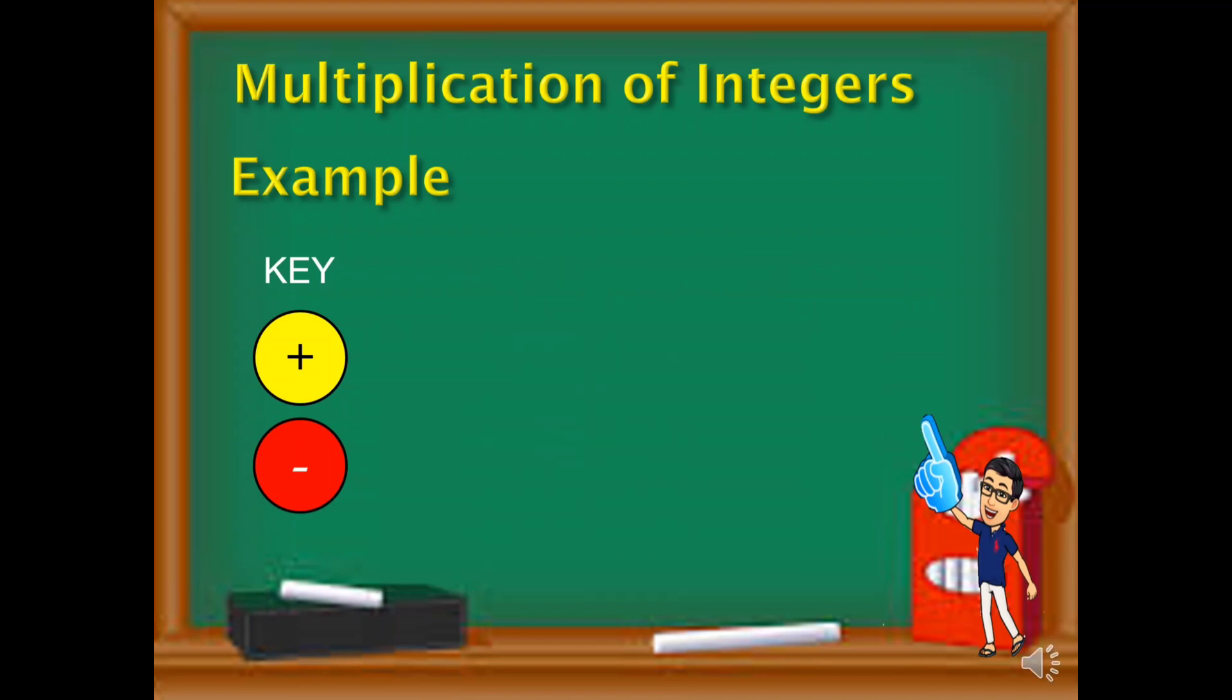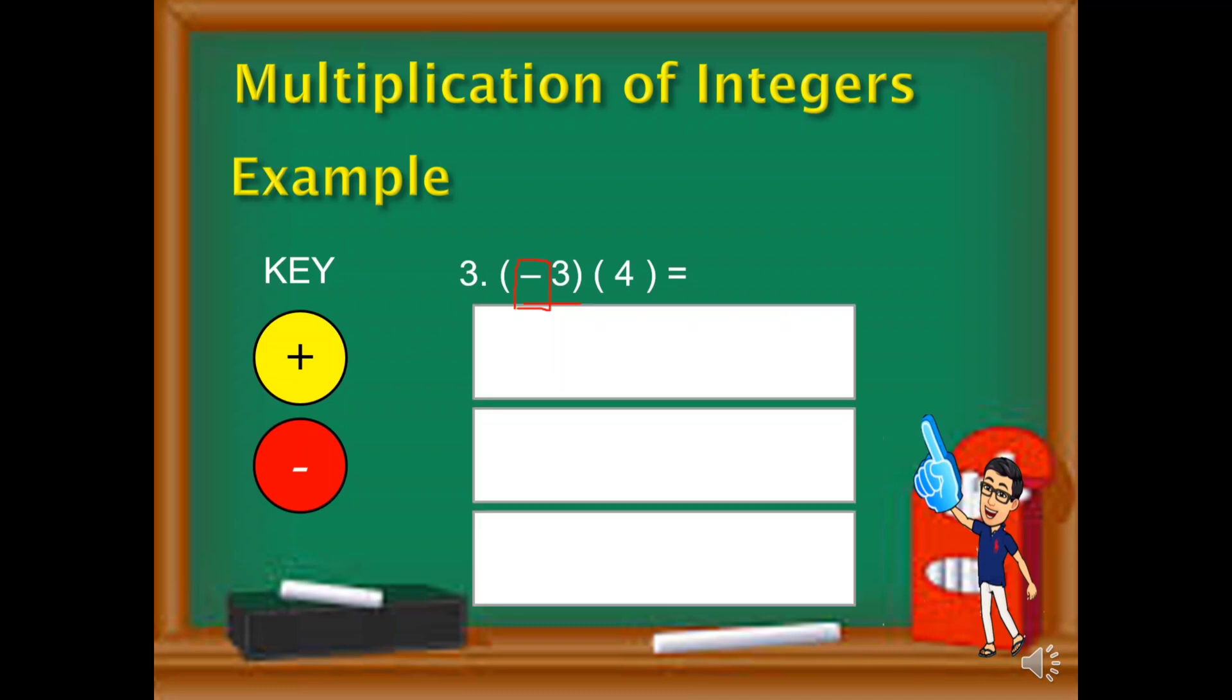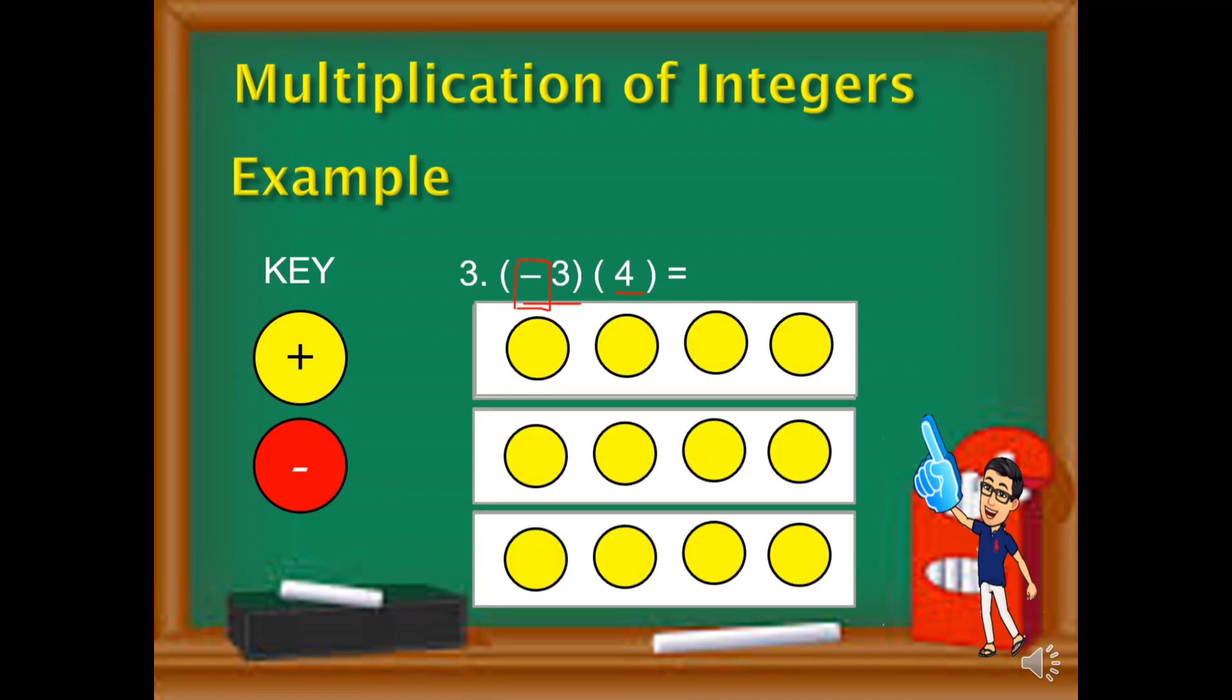Let's proceed with the third one. Third example is negative 3 times 4. So this third example is different from the first two examples, kasi negative na yung first number natin or first integer. So tatlong group. Huwag muna natin pakilaman yung negative. Later on, gagamitin natin yan. Kaya tatlong group muna yung iisipin natin. So we have 3 groups. By the way, pwede natin isulat vertically katulad ng dalawang unang example. This time, sinulat naman natin in horizontal manner. So ilan ang ilalagay sa loob ng bawat group? Apat. Apat na yellow chips kasi positive ang 4 like this. So we have 3 groups of yellow chips.